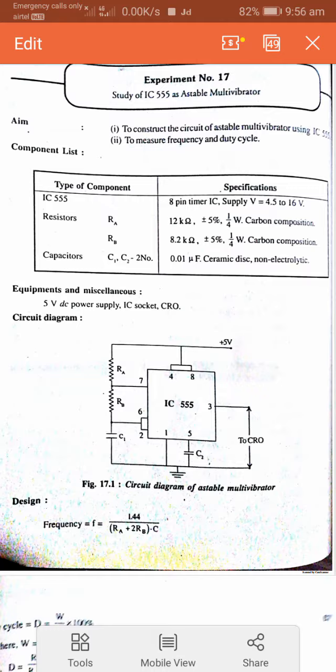As per the given circuit diagram, the circuit is assembled using IC555 on a breadboard along with components Ra, Rb, C1, and C2.